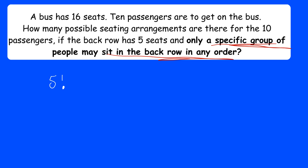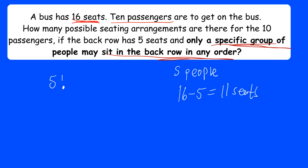For the remaining people — we didn't select a specific group for the other seats. I had 10 passengers, five are arranged at the back, so I'm left with five people. Five seats are gone, so from 16 seats I'm left with 11 seats. Now I want to determine how many ways I can arrange the remaining five people in those 11 seats — this is where we use permutation.